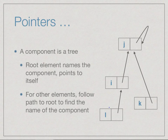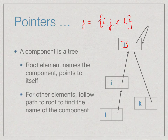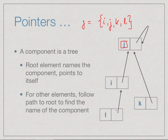After a period of merges, pointers will point to other nodes instead of themselves. For example, a component containing i, j, k, and l with name j means all these elements ultimately trace a path to node j, which points to itself. Element i points to j directly, while l points to i, which points to j. So find works by starting at a node and following pointers up the tree until reaching a root — a node pointing to itself — which gives the component name.